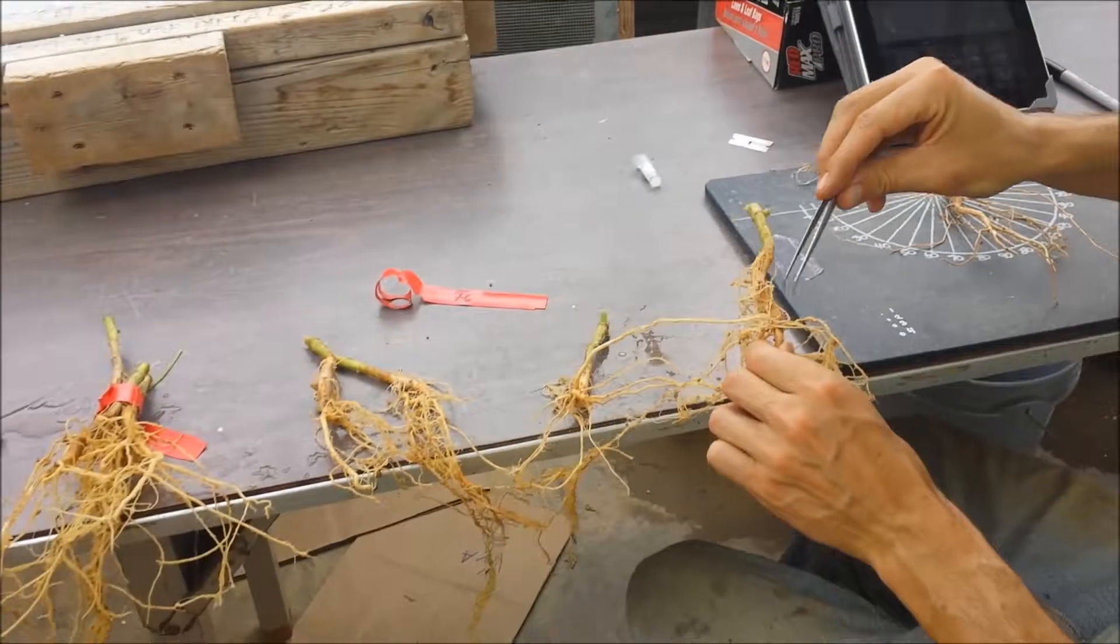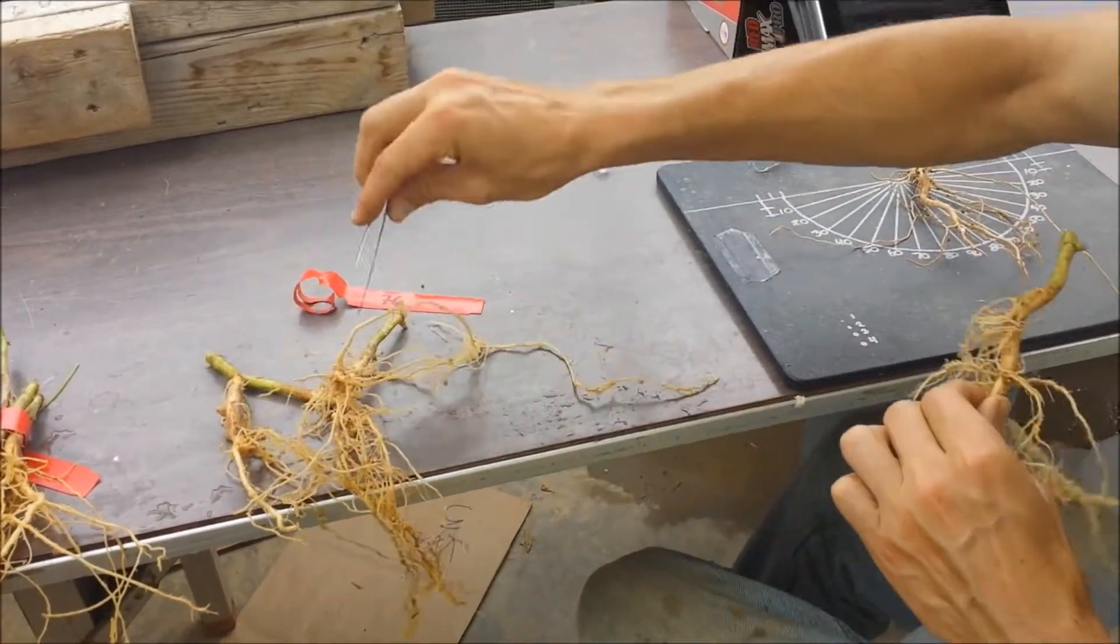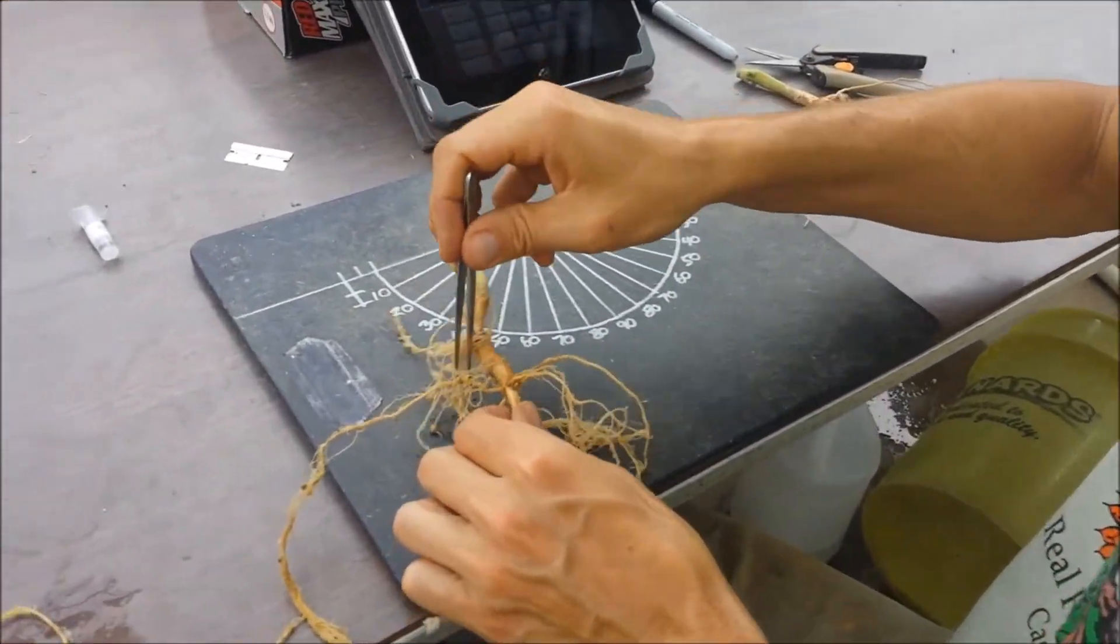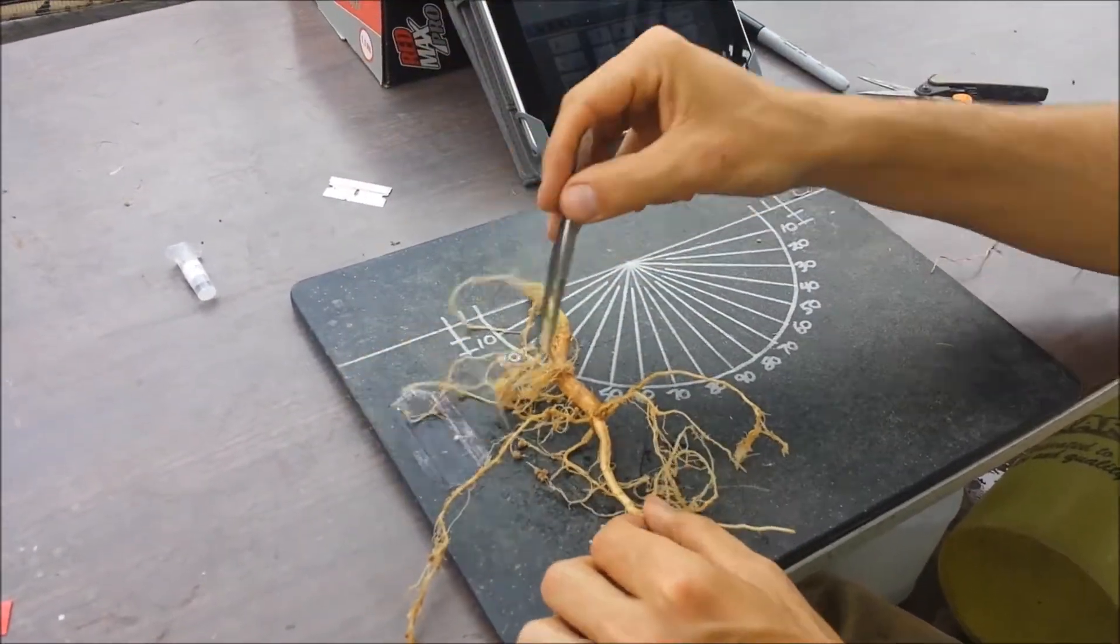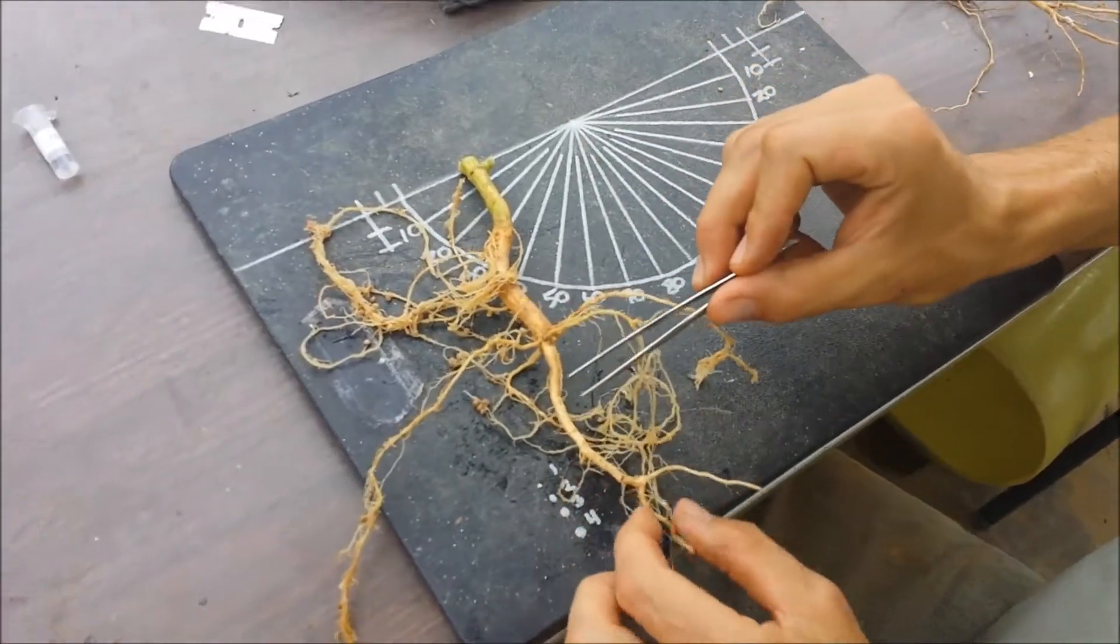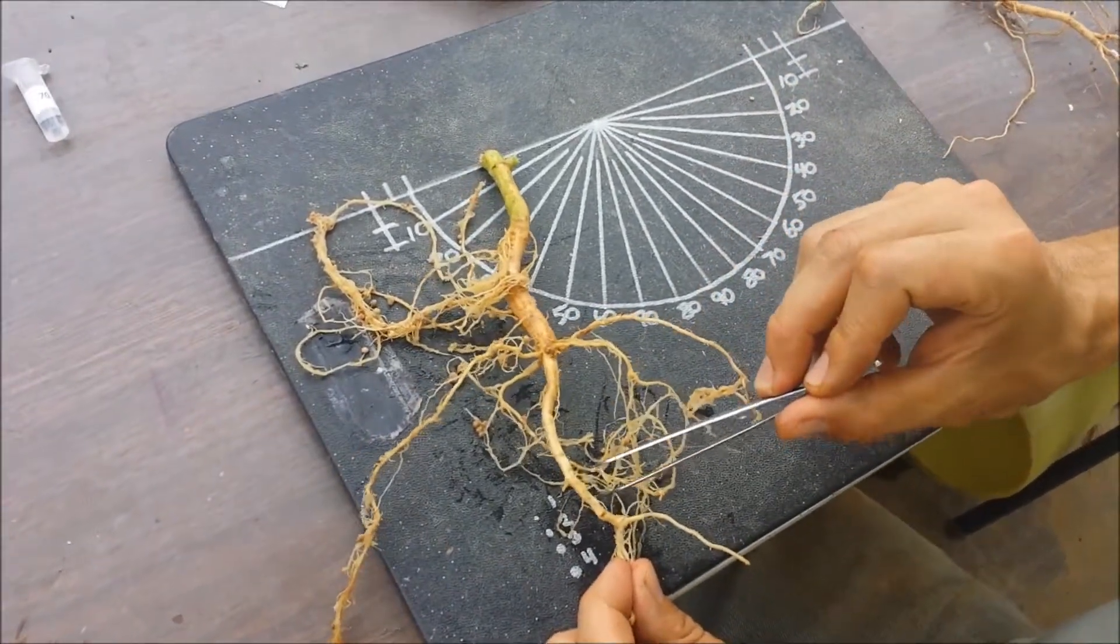If we wanted to look at this sample, we can see a much larger number of adventitious roots up here. The basal roots are right here, and the radical is continuing down this direction.